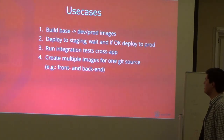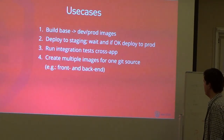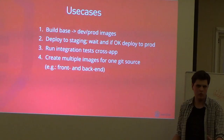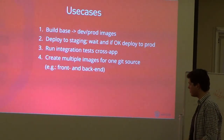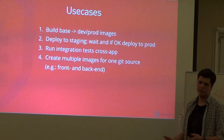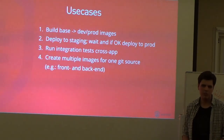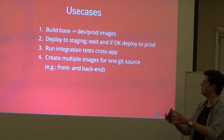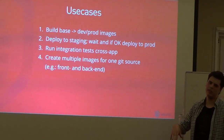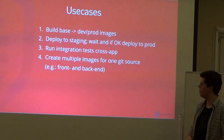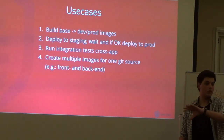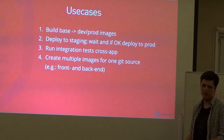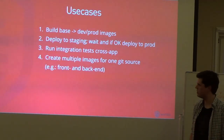The fourth one: create multiple images for one Git source. Consider the use case where you have one code base consisting of your front-end and your API. You would want to run two workflows based on that one Git push - one building your front-end and another building your API or back-end.